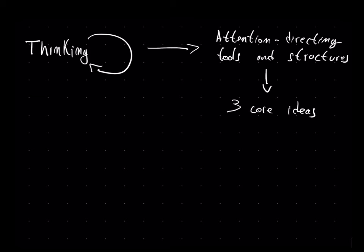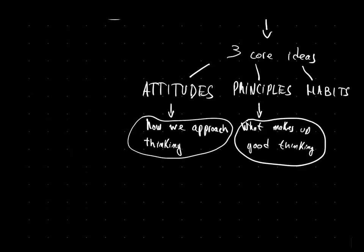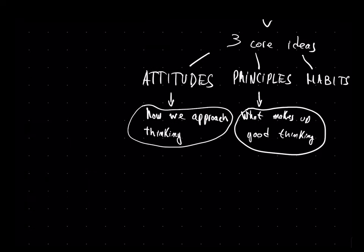Now, what the author does in this book is he discusses what he calls attention-directing tools, as well as structures to allow us to think about how we think. Now, he bases this into three core ideas: attitudes, principles, and habits. Attitudes are about how we approach thinking. Principles are about what makes up good thinking. Now, habits are about the routines of thinking.